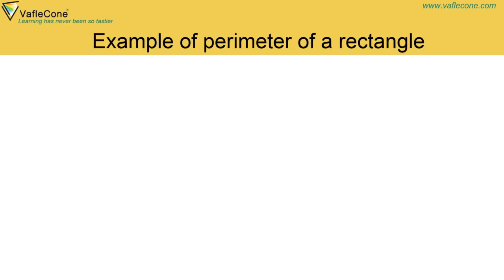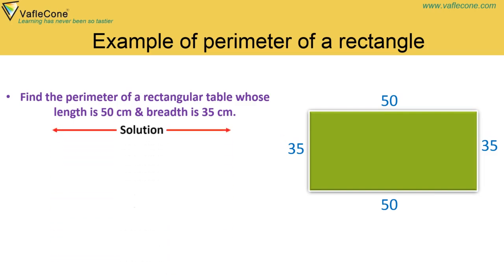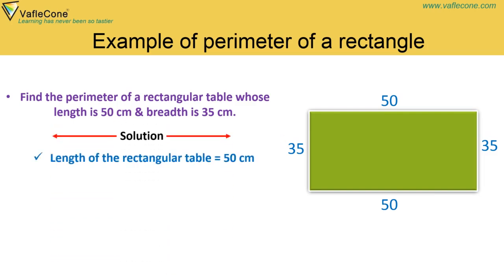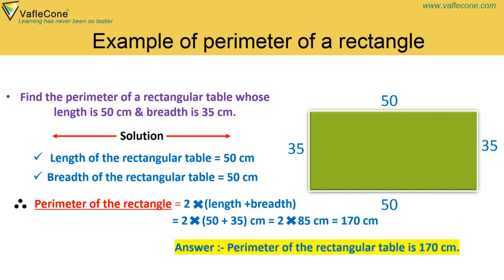Example: Find the perimeter of a rectangular table whose length is 50 cm and breadth is 35 cm. Solution: Length = 50 cm, Breadth = 35 cm. Perimeter of rectangle = 2 into (length plus breadth) = 2 into (50 plus 35) cm = 2 into 85 cm = 170 cm. The perimeter of the rectangular table is 170 cm.